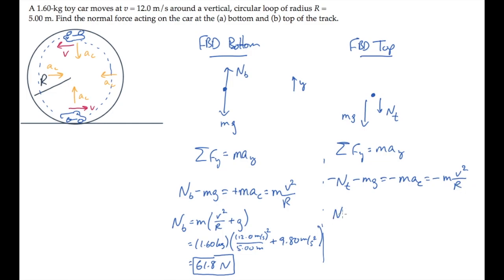Now we can solve for the normal force at the top of the track, seeing that this time we have mv squared over r minus g instead of plus g, and substitute the known values to find the normal force at the top is the smaller value of 30.4 newtons.